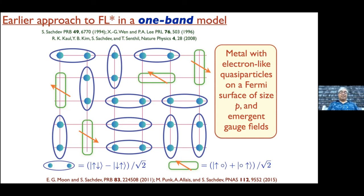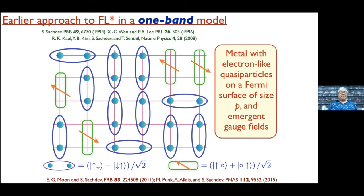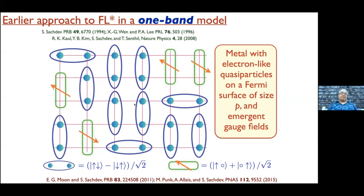That's a picture of how you could get the wrong Fermi surface that violates the Luttinger theorem. This requires these resonating bond structures to also be present, which is why there's also an emergent gauge field.